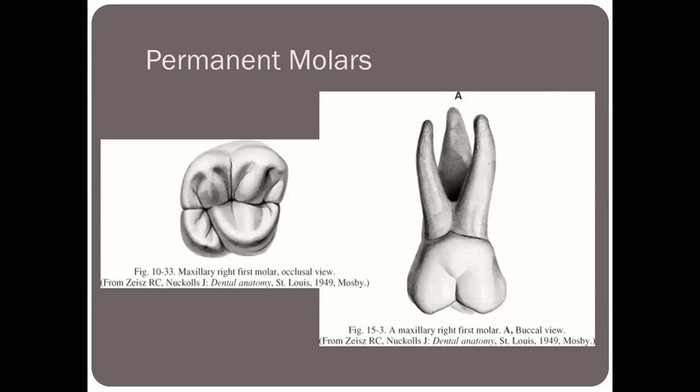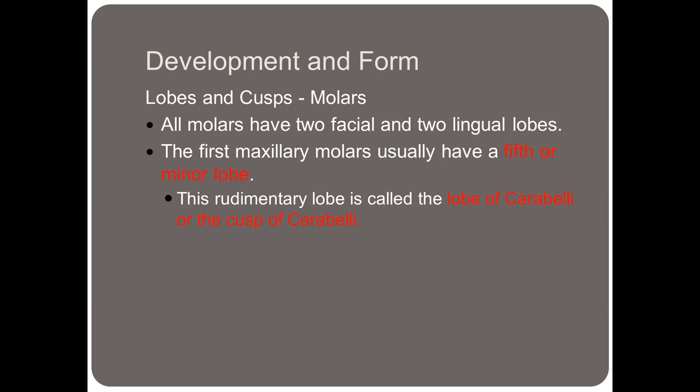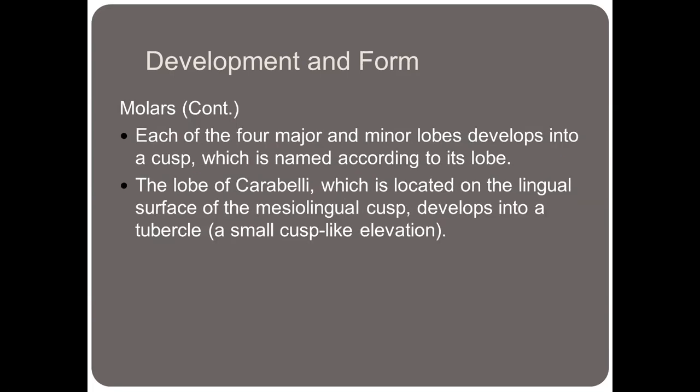Now let's talk about molars. A maxillary molar has three roots. All molars have two facial and two lingual cusps, except the maxillary first molar, which usually has a fifth cusp or minor lobe — a rudimentary lobe called the lobe of Carabelli or the cusp of Carabelli. Each of the four major lobes develops into a cusp named according to its lobe. The lobe of Carabelli, located on the lingual surface of the mesiolingual cusp, develops into a tubercle — a small cusp-like elevation that is not a true cusp.